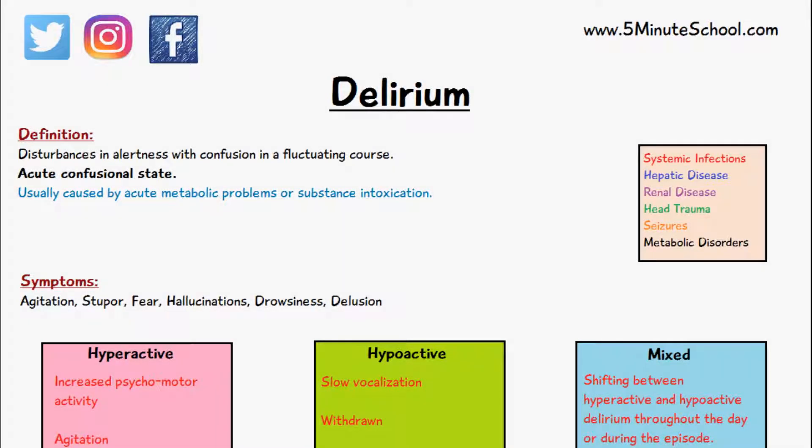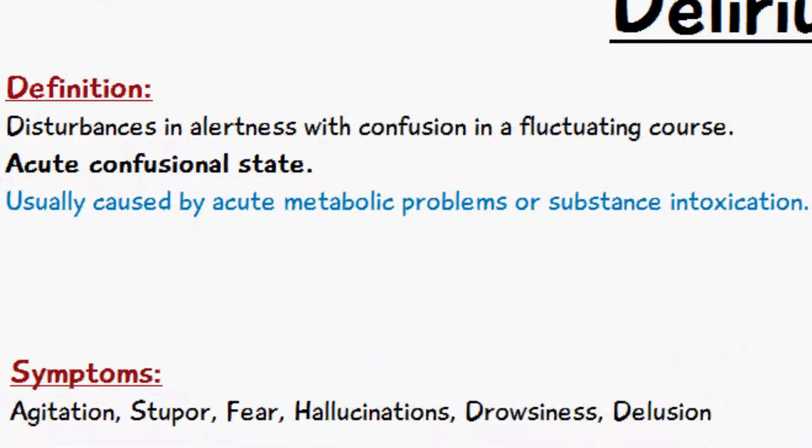Delirium is a neurocognitive disorder which is associated with disturbances in alertness. The patient presents with confusion and this occurs in a fluctuating manner, so the patient sometimes doesn't appear to be fully alert and awake or know what's going on around them, and it's associated with a variety of different symptoms.